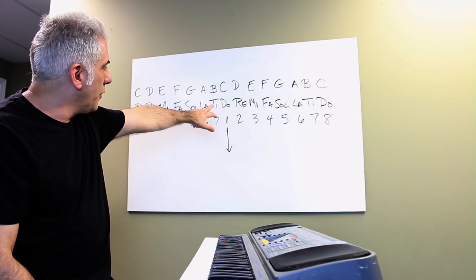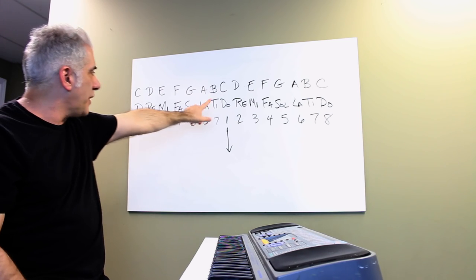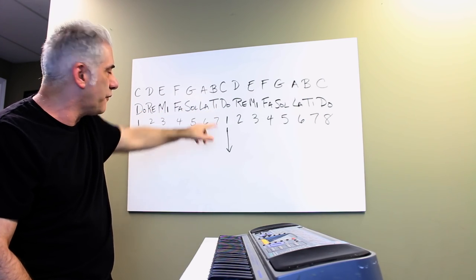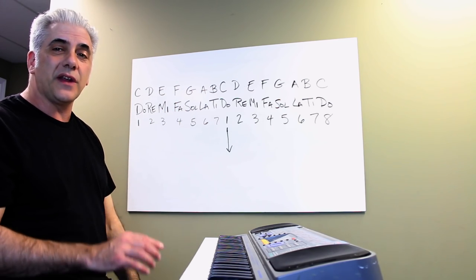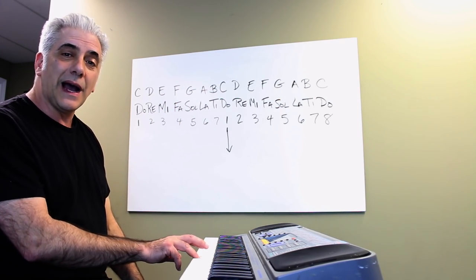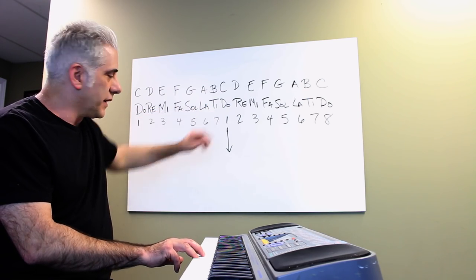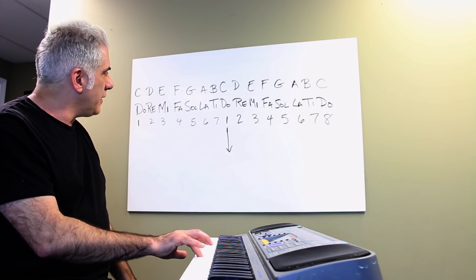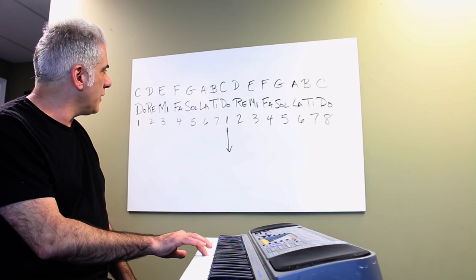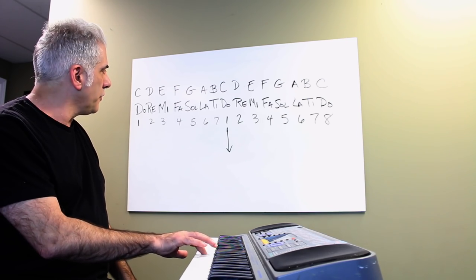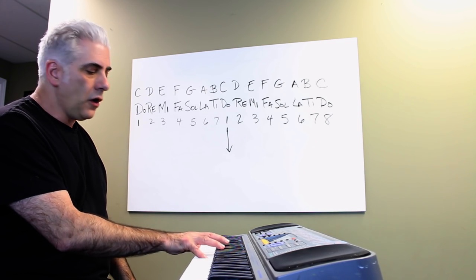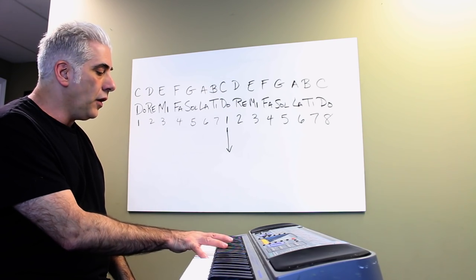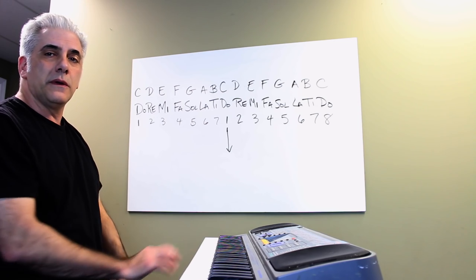The second half we're gonna do descending. So I'm gonna start on this do and I'm gonna keep going alternating back and forth as we move down scale degrees. I'm gonna start on high C here. Do, ti, do. Do, la, do. Do, sol, do. Do, fa, do. Do, mi, do. Do, re, do. Do, do, do, do.